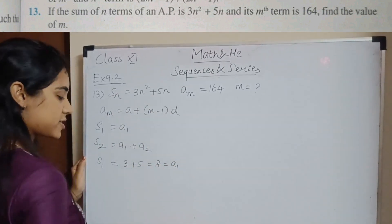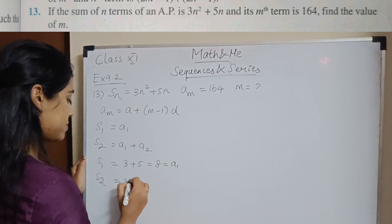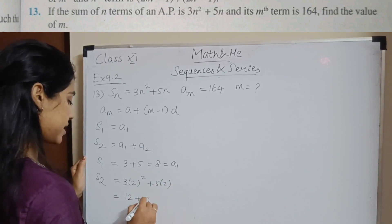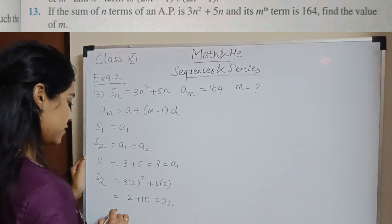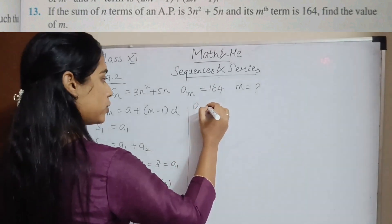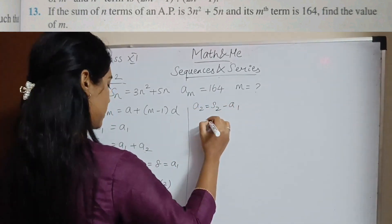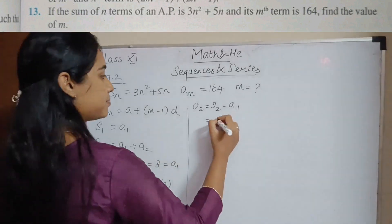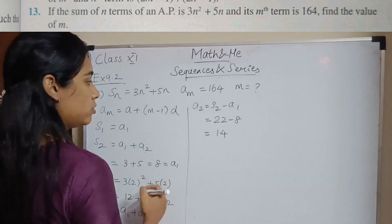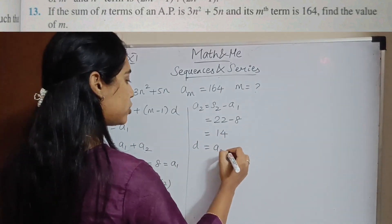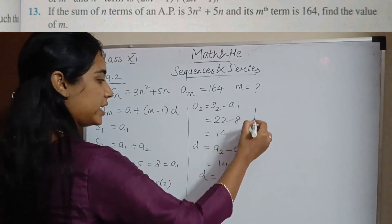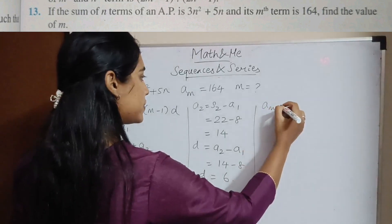S1 = 8, which is the first term. S2 = 3 × 2² + 5 × 2 = 12 + 10 = 22, which is a1 + a2. So a2 = S2 − a1 = 22 − 8 = 14. The common difference d = a2 − a1 = 14 − 8 = 6.